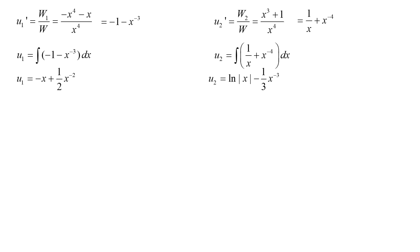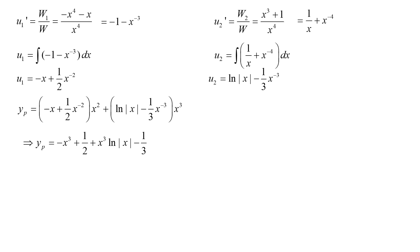Plugging u1 and u2 into yp = u1 x² + u2 x³ gives (-x + (1/2)x^{-2})x² + (ln x - (1/3)x^{-3})x³, which simplifies to -x³ + 1/2 + x³ ln x - 1/3. Combining the constants gives -x³ + x³ ln x + 1/6.